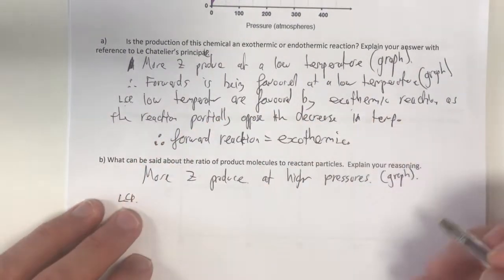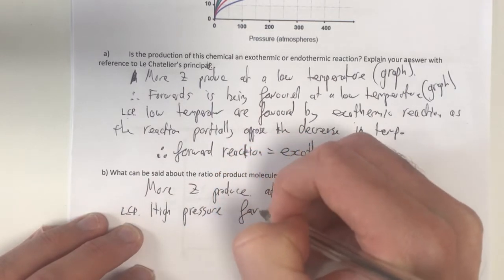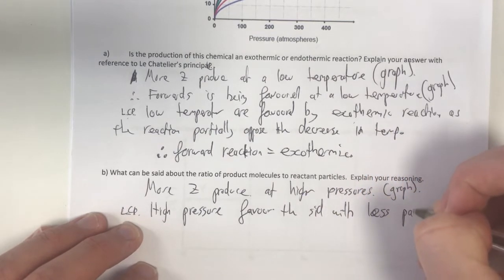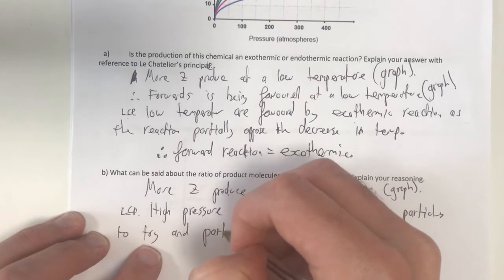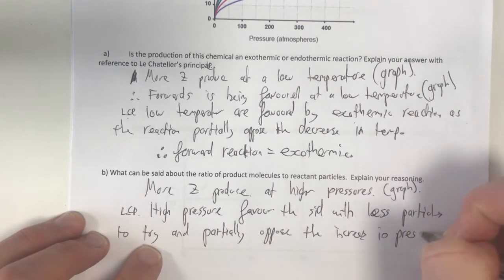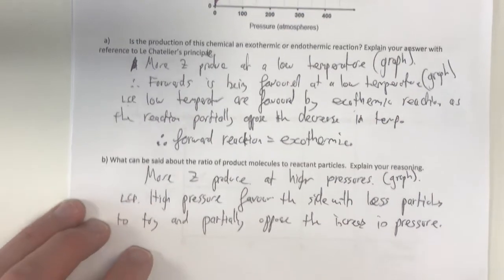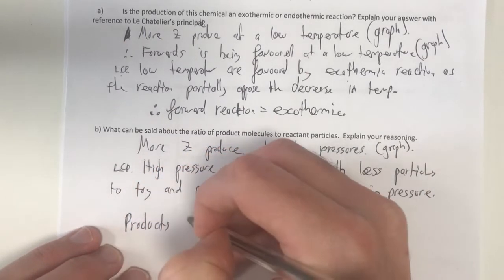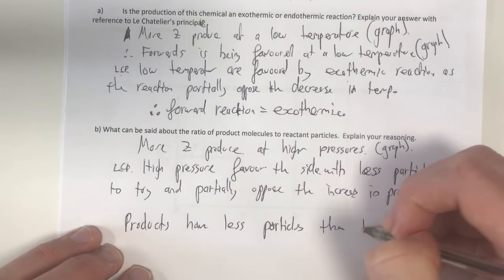So what does Le Chatelier's principle say about pressure? High pressures favour the side with less particles to try and partially oppose the increase in pressure. That's what Le Chatelier's principle says. High pressure favour the side with less particles to try and partially oppose the increase in pressure. So that means that the products have less particles than the reactants.